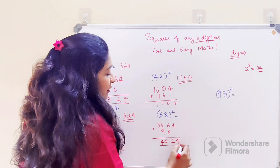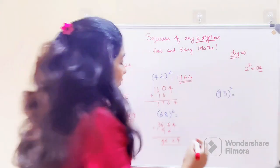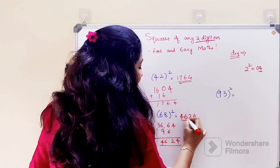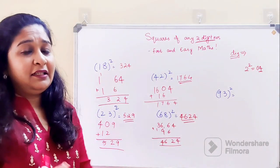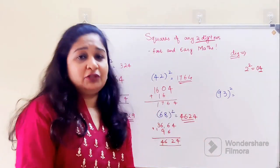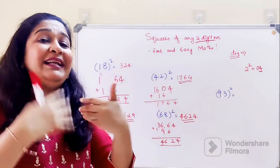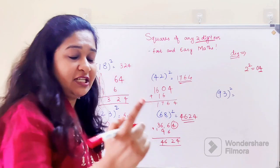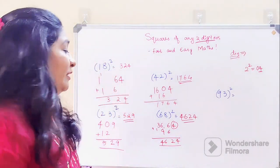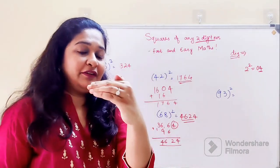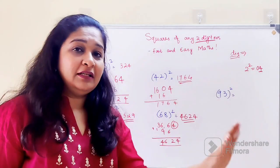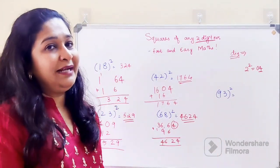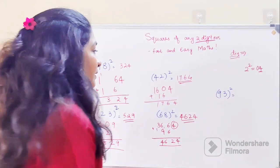Now students, please understand: most of the students understood the trick, but the problem is while adding they forget to leave the last digit of your first line. Whatever is the answer you're getting in the first line, the last digit has to be left. Only then will you get your correct answer; otherwise you might mess up.